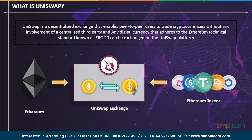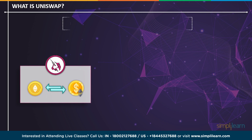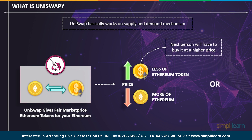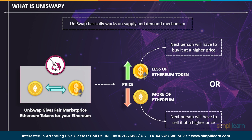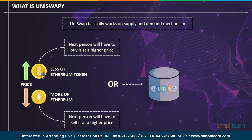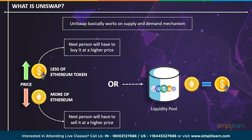Uniswap basically works on supply and demand mechanisms. On Uniswap, when you exchange your Ethereum, they give you a fair market value of the basic Ethereum token. After you are done, the price of the basic Ethereum token rises because there are fewer of them since you bought it, and the price of Ethereum drops because there is more of it since you sold it. Whoever comes next will have to buy the basic Ethereum token at a higher price or sell Ethereum at a higher price. This is done to even out the liquidity pool so that Uniswap has an even amount of Ethereum and other basic Ethereum tokens.